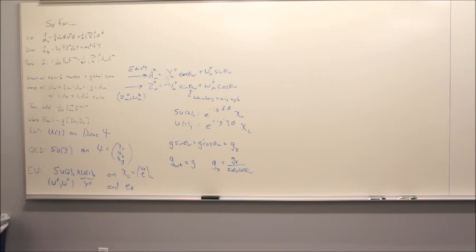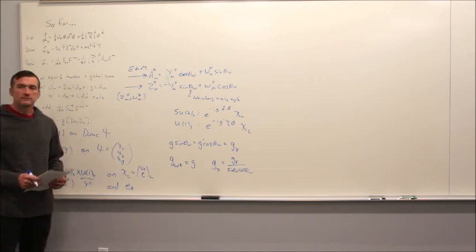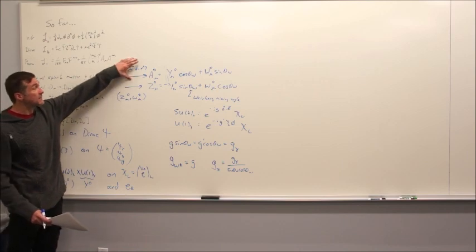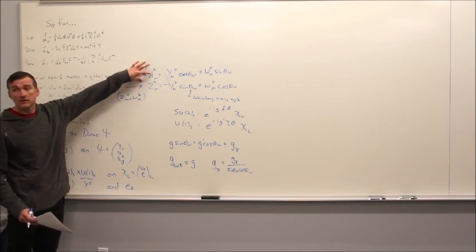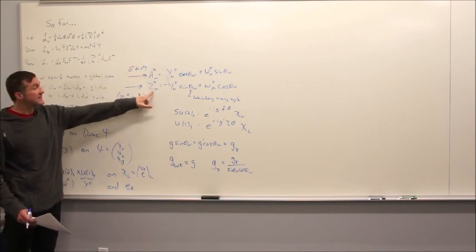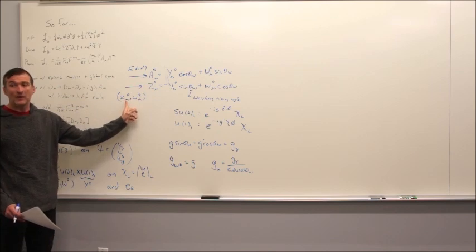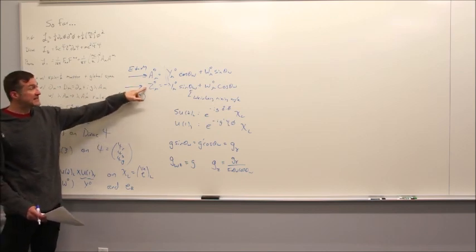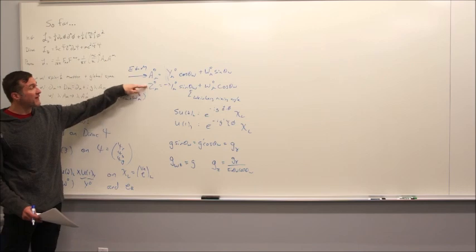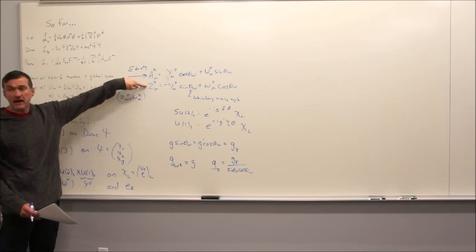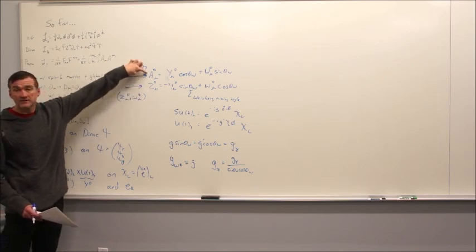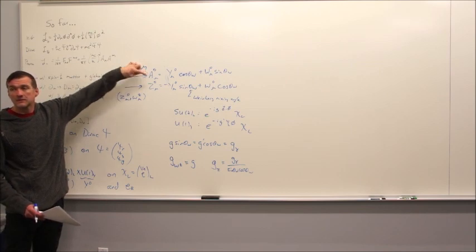Every gauge field has a lower Lorentz index μ. How does Z_μ fit into the E&M picture? It doesn't — E&M just uses A_μ. This linear combination is part of the weak interactions. And this is very different from E&M because the Z^0 boson is massive — it's huge — whereas the photon is massless.